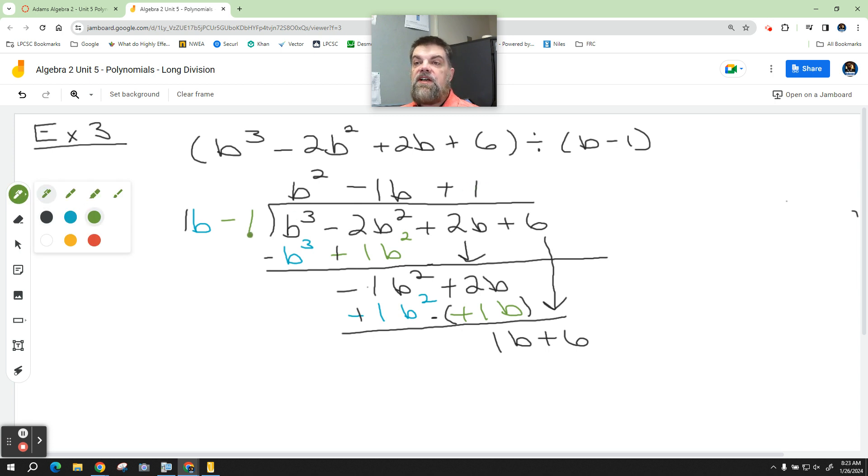Positive 1 times negative 1 is negative 1. And then 1 times 1b is a positive 1b, right? What do we do next? Next, we add the opposite. So this becomes a negative. This becomes a positive. These add up to 0, so they kind of cancel, and so we're left with 7. That's the remainder.